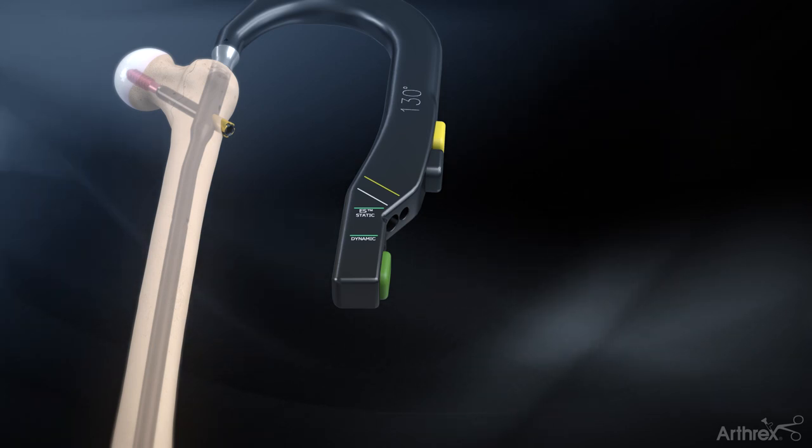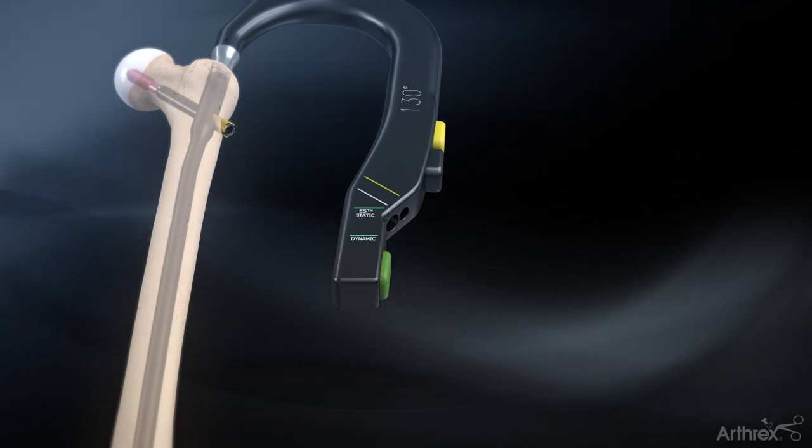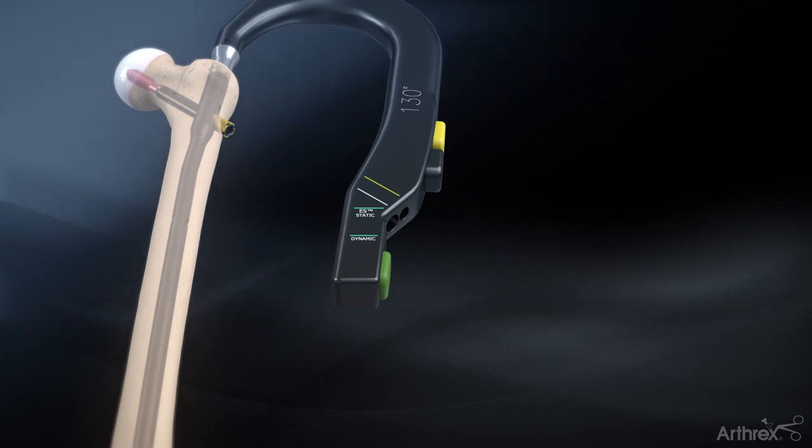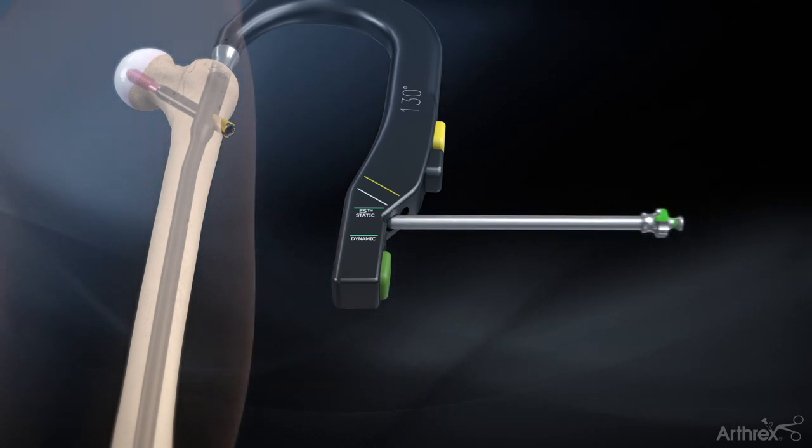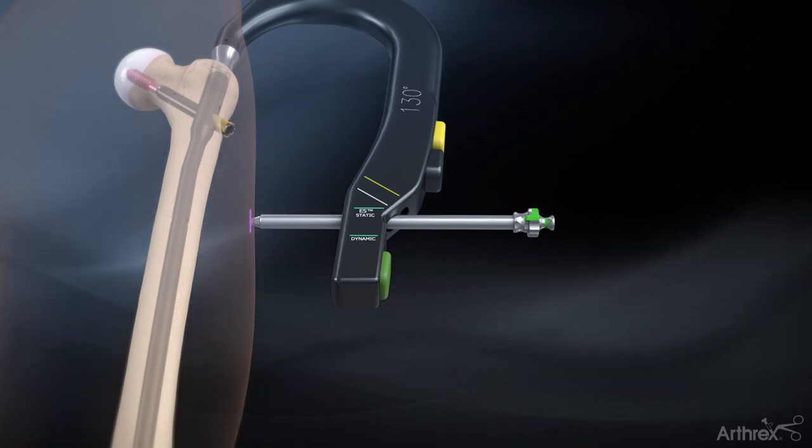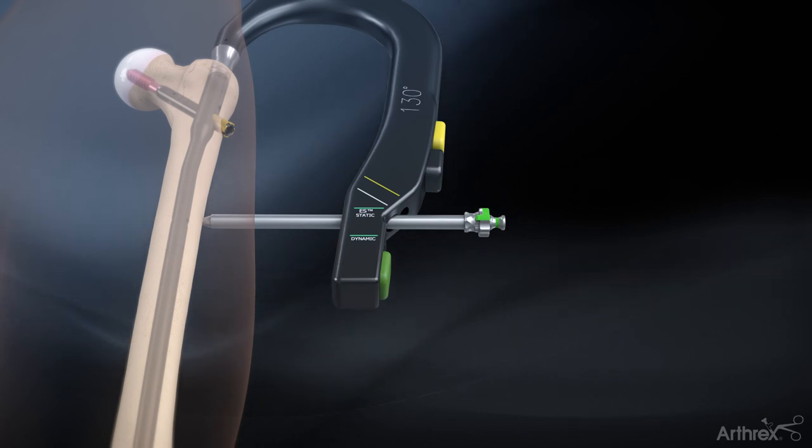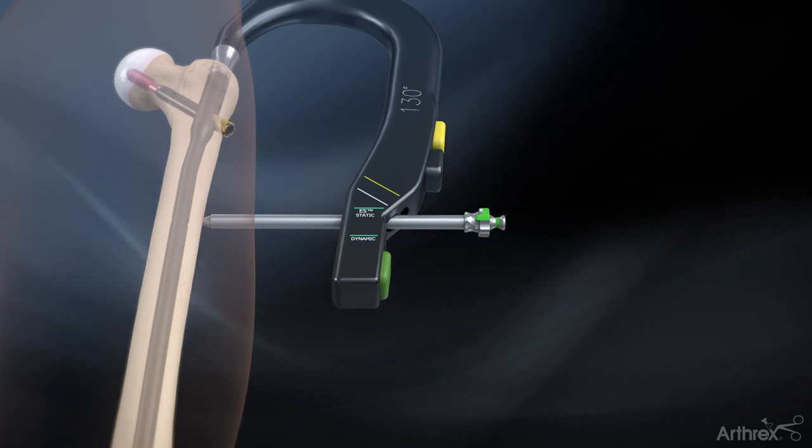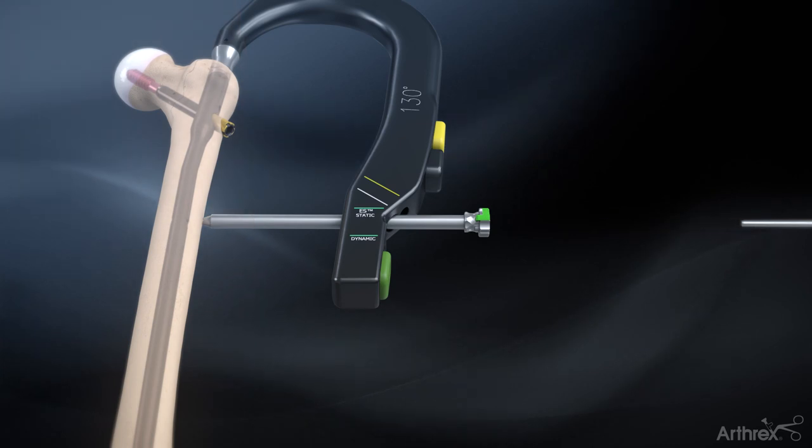For the ES trochanteric nail and short trochanteric nail, distal locking is performed through the targeting module. Place the distal screw triple sleeve assembly through the appropriate distal hole in the targeting module and mark the skin. Make the incision and advance the distal screw triple sleeve assembly to the lateral cortex of the bone. Remove the distal drill guide obturator.